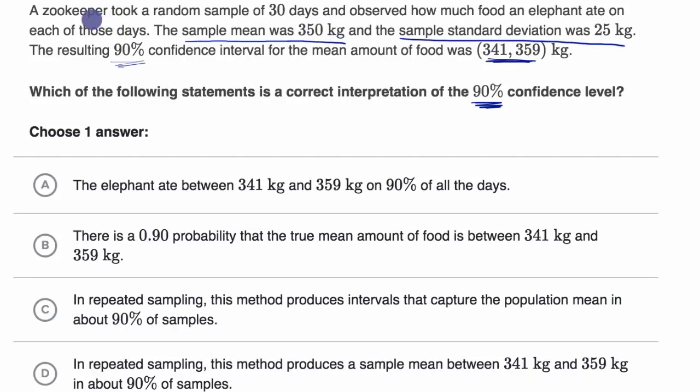A zookeeper is trying to figure out what the true expected amount of food an elephant would eat on a day. You could view that as the mean amount of food that an elephant would eat on a day. If you view all the possible days as the population, you could view this as the population mean for mean amount of food per day. Now the zookeeper doesn't know that, and so instead they're trying to estimate it by sampling 30 days.